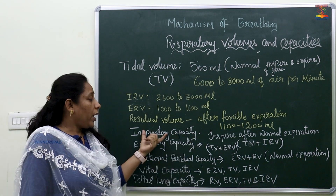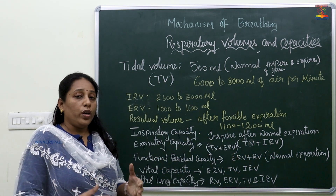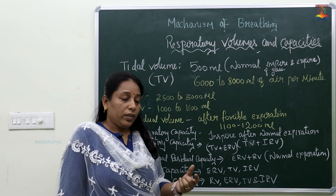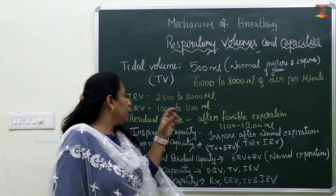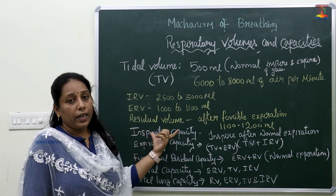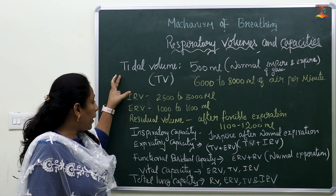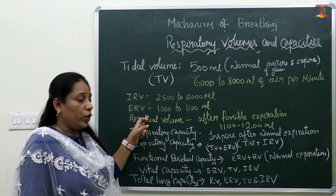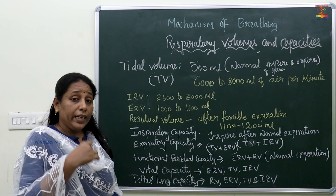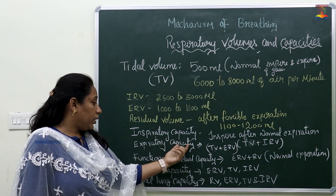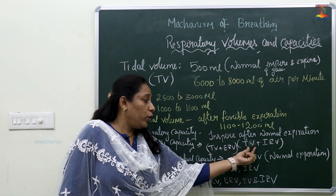Inspiratory Capacity is the total volume of inspiration after normal expiration, calculated as Tidal Volume plus Inspiratory Reserve Volume (TV + IRV). Expiratory Capacity is calculated as Tidal Volume plus Expiratory Reserve Volume (TV + ERV) — the normal amount of air inhaled after expiration.